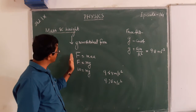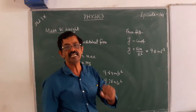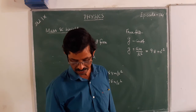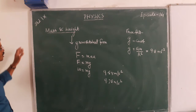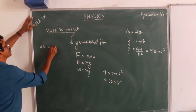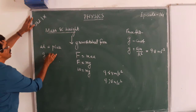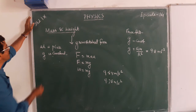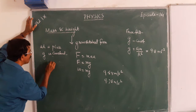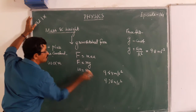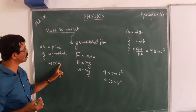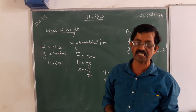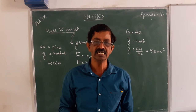Weight is the gravitational force and it acts vertically downward. At a particular place, g is constant. Hence W is proportional to m. This means, for a particular place, weight is the measure of mass of a body. It may change when we go to some other place.